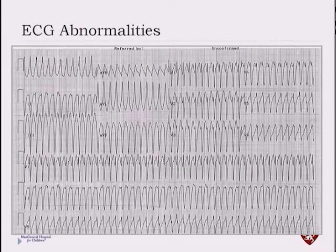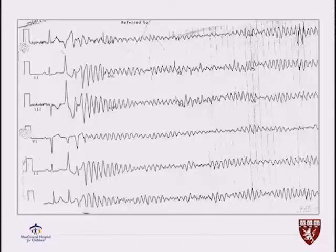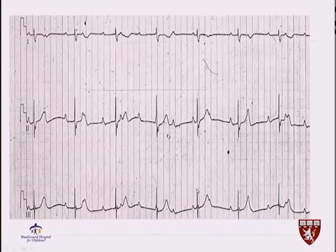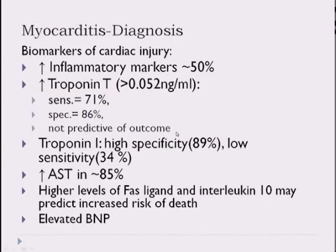One patient presented with ventricular tachycardia and torsade. Another patient presented with complete AV block where the atrial rate and junctional rate are dissociated, the junctional rate much slower. There are elevations of biomarkers in myocarditis. Typically we rely on troponin T, which is more specific; troponin I has very low sensitivity.